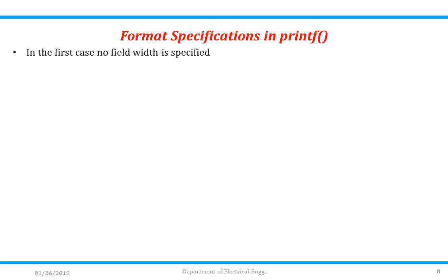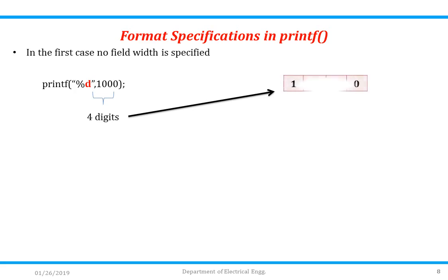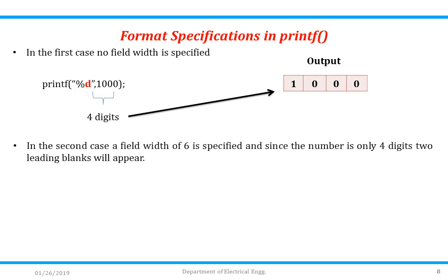In the first case, no field width is specified: printf("%d", 1000) — there are 4 digits so the output is simply 1000. In the second case, a field width of 6 is specified: printf("%6d", 1000). Since the number is only 4 digits and the field width is 6, two leading blank spaces will appear, and the number is printed right-justified.